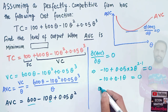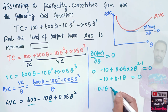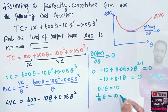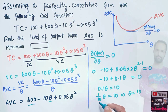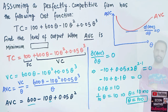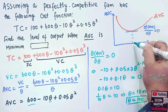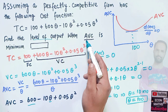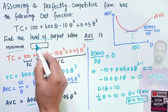Solving for q: 0.1q equals 10, which gives q equals 100. Therefore, the level of output at which average variable cost is minimized is 100.